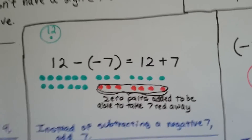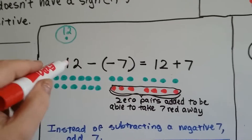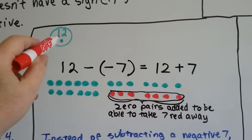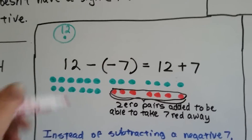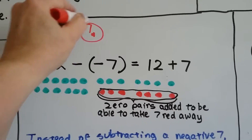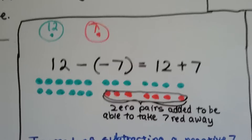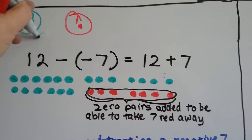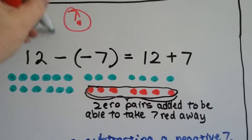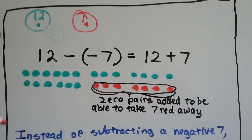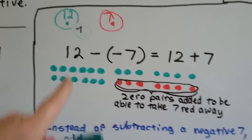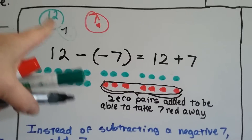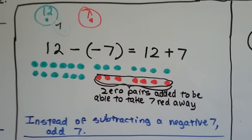So here's what's happening: you've got positive 12 — 12 green dots — and it wants you to take 7 red ones away. We can't, we don't have 7 red ones. So we're adding 7 red dots, but in order to do that we also add 7 green dots as zero pairs. After taking the 7 red ones away, we end up with 19 green dots.